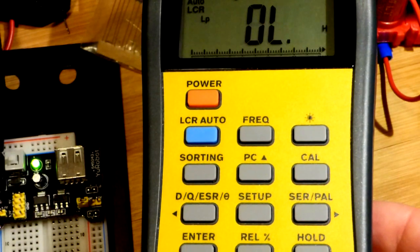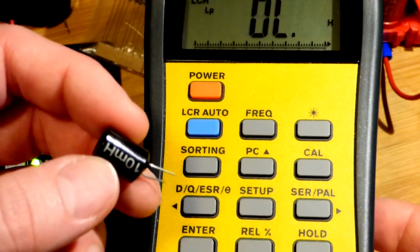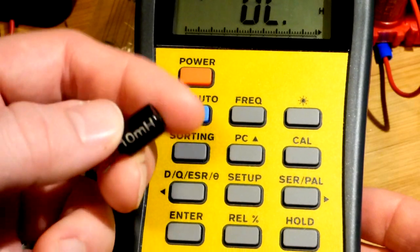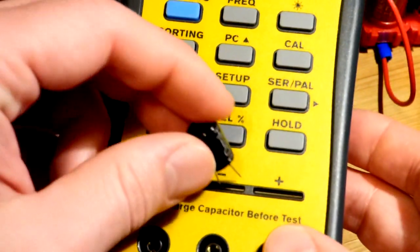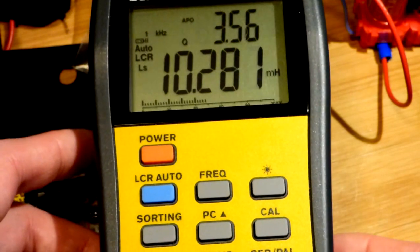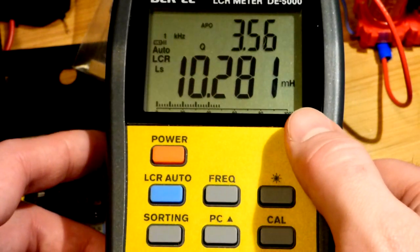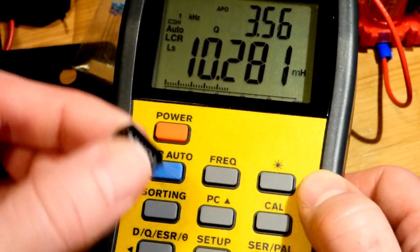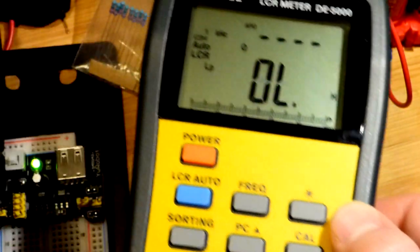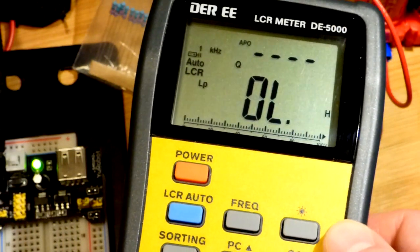I also have this one from a kit—you can see it has 10 MH written on it. We'll plug it in and it will automatically test and find that it is indeed 10 millihenry. It clears once I remove it since it's testing live.